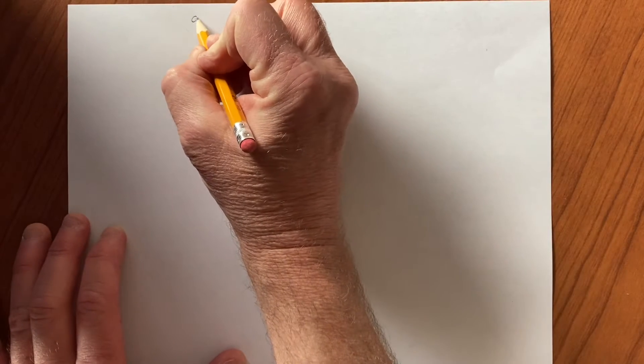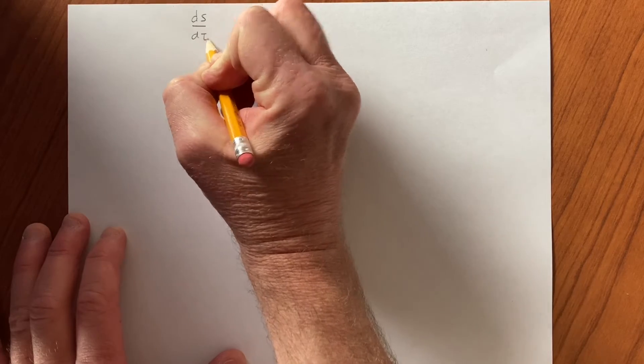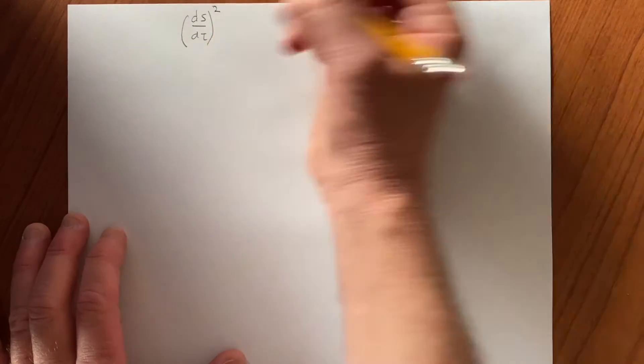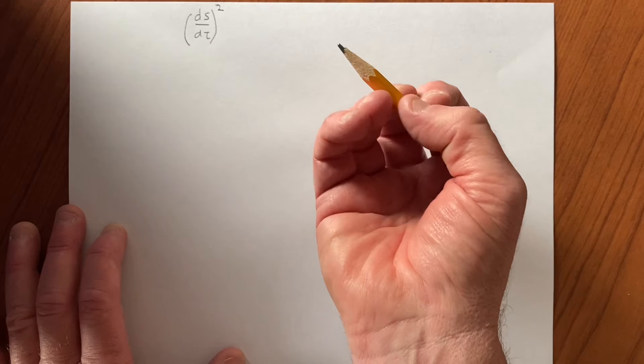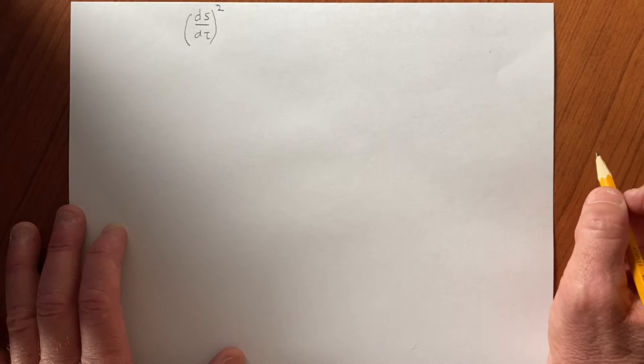We just noticed that a scalar ds by dτ squared, the rate at which the interval varies with proper time squared, is obtained by the combination of two objects that are not the same object. The generalized dot product is not just the result of a four-vector dotted into another four-vector. There's the metric that comes in between, so let's look at another object where we can see the same kind of structures.